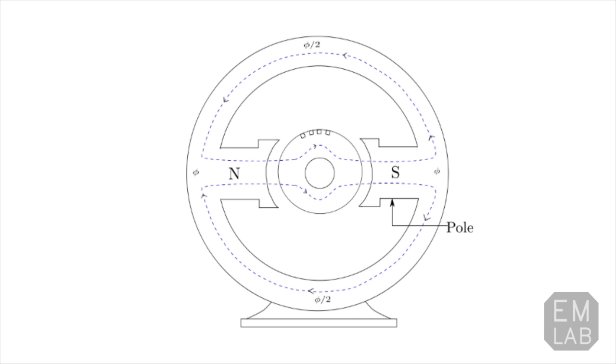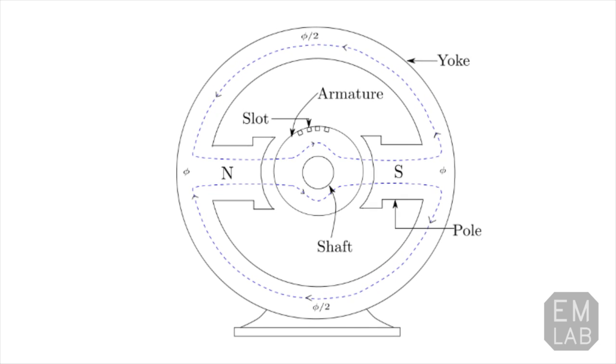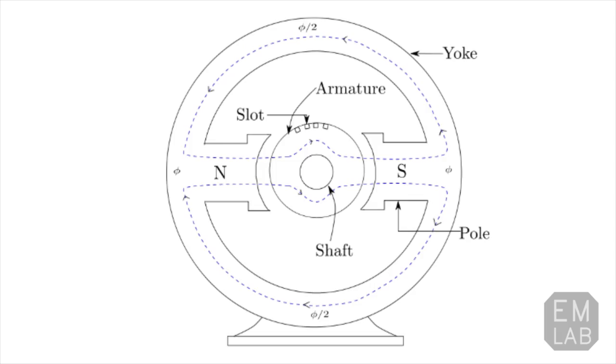The magnets will set up a flux phi which completes its path through the yoke and the armature. What will happen if we pass a current through the armature coil? You know that a current carrying conductor placed inside a magnetic field will feel a force which is perpendicular to the direction of current and the magnetic field.